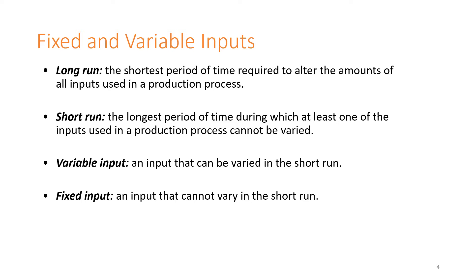In the short run, it is the longest period of time during which at least one of the inputs used in the production process cannot be varied. As for the short run, there always has to be one fixed input, whereas in the long run, all inputs tend to become variable over time. More on this when we do the comparison between the long and short run curves.